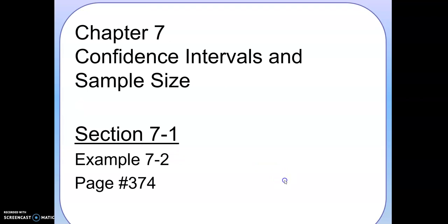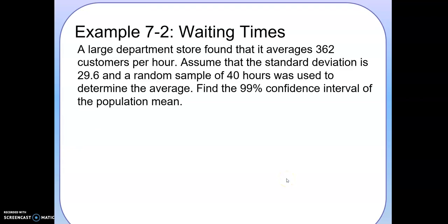Let's look at another example. A large department store found that it averages 362 customers per hour. Assume that the standard deviation is 29.6 and a random sample of 40 hours was used to determine the average. Find the 99% confidence interval for the population mean. So they want to know, on average, how many people go to their store. But they only sampled 40 hours.